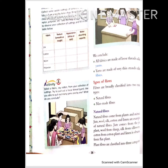Fibers are broadly divided into two types: natural fiber and man-made fiber. Natural fiber comes from plants and animals. Jute, wool, silk, cotton and linen are examples of natural fiber.